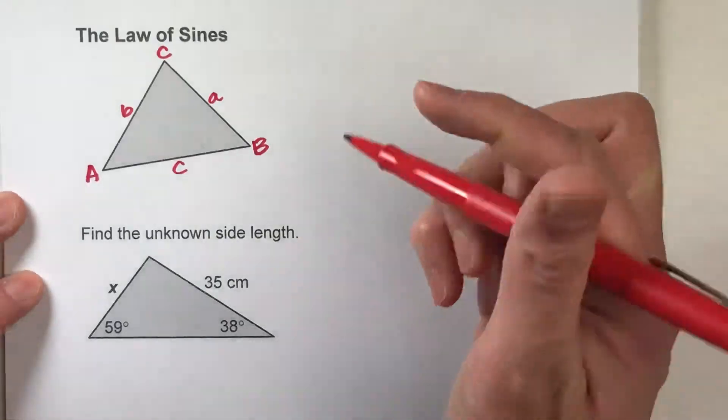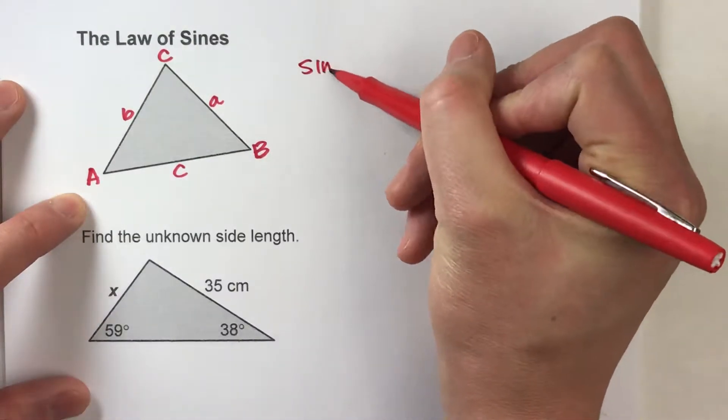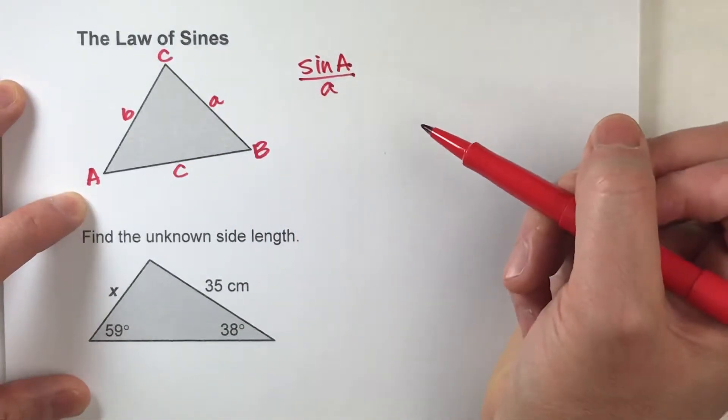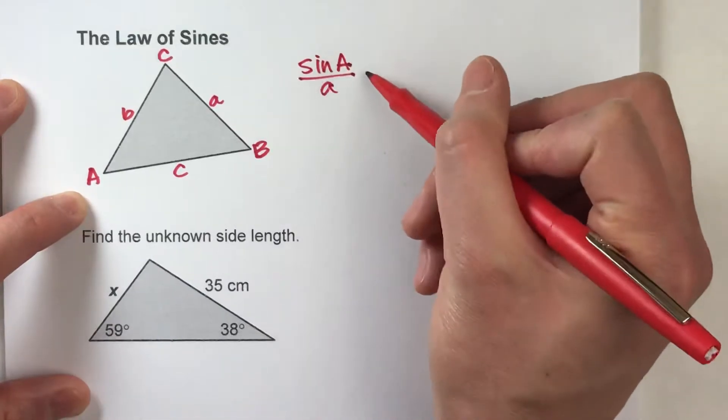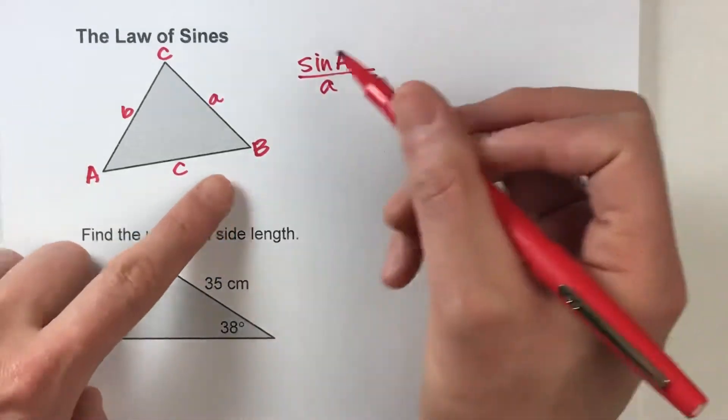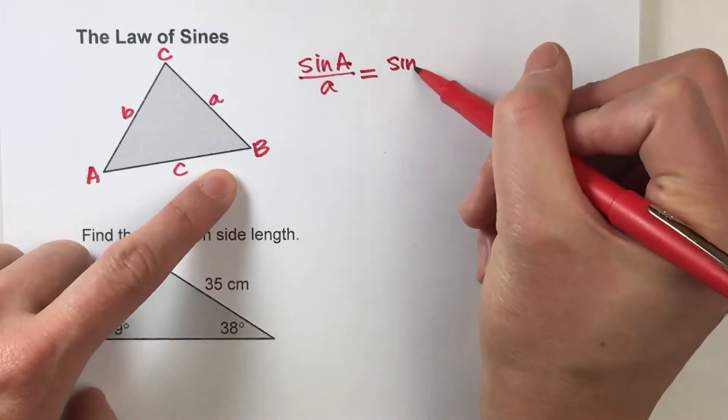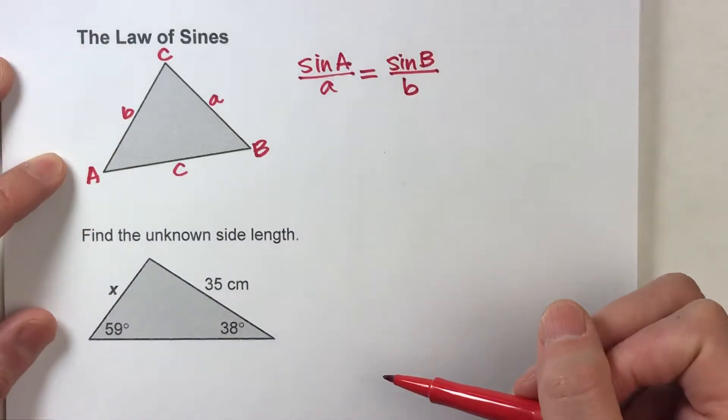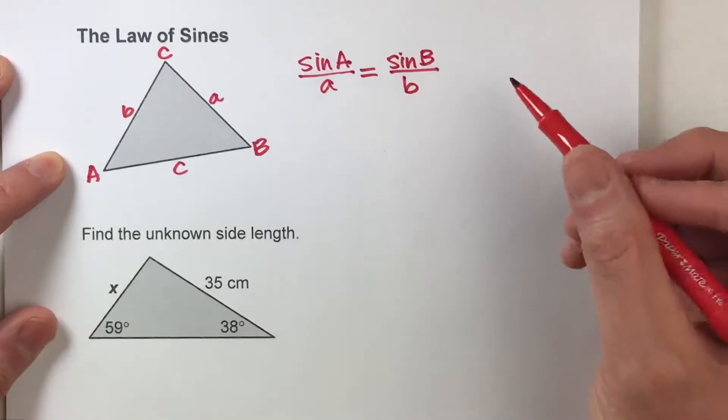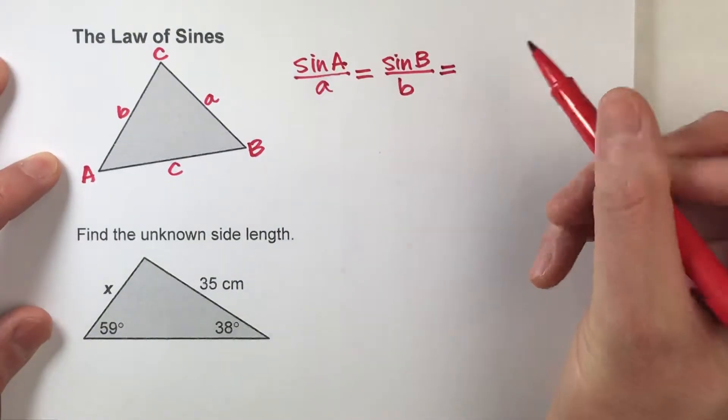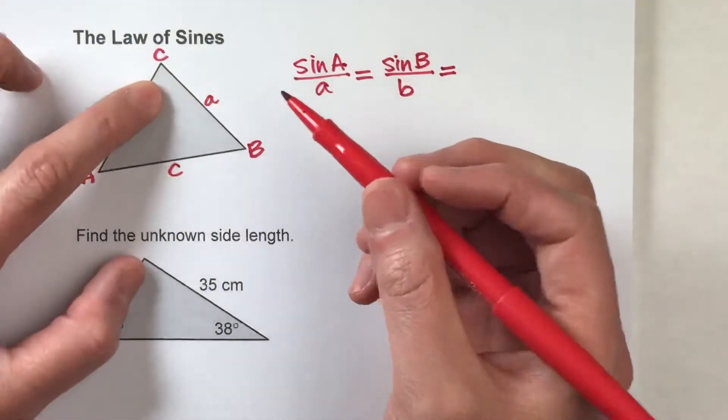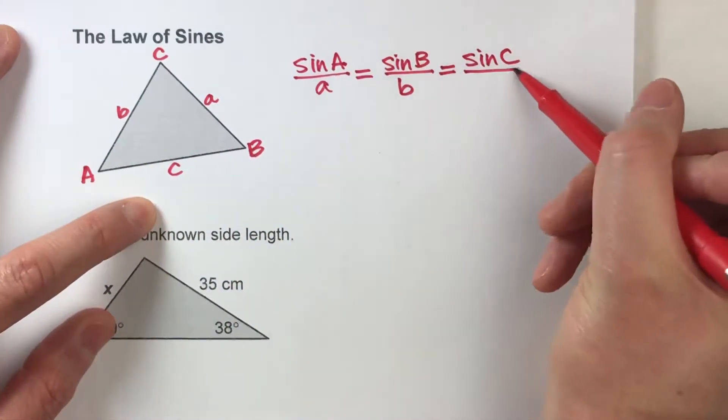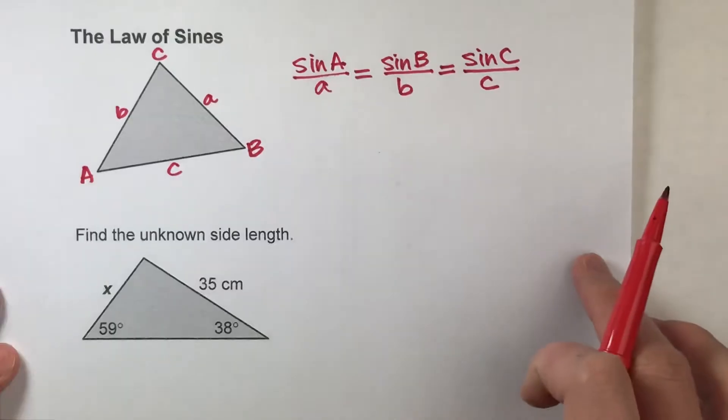So the law of sines says that the sine of angle A divided by the length of the side across from it, well that ratio is equal to the sine of angle B divided by the side across from it. And it even goes a step further to be ultra flexible. It says also that those ratios are also equal to the sine of angle C divided by the side across from it.